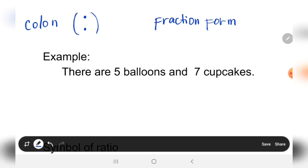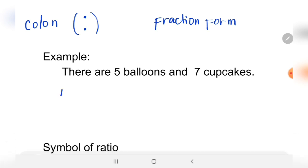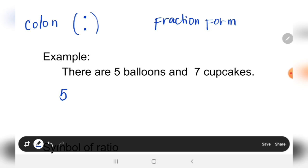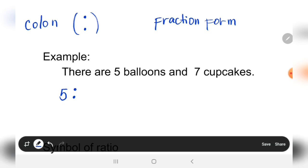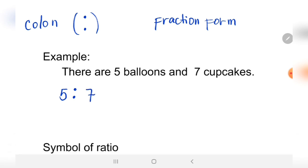There are five balloons and seven cupcakes. Now, how many balloons? There are five. In writing ratio, to separate the quantities, you're going to write in the middle the colon sign. Next, how many cupcakes? That is seven. So this is now our ratio.